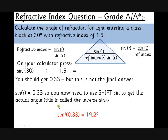Sine minus 1 of 0.33, the inverse sine, gives you 19.2 degrees. Again, you've always got a little check. 19.2 is less than 30, it will always be refracted towards the normal.